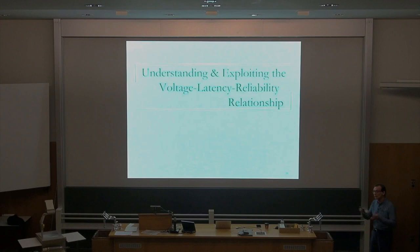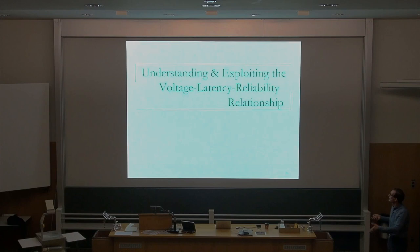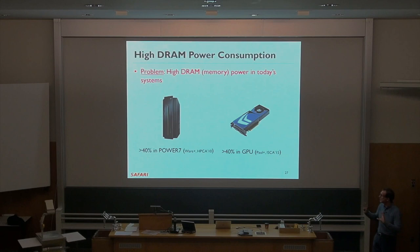There's clearly a relationship between latency and reliability. But the next question is: what is the relationship between voltage, latency, and reliability? Going three ways — voltage, latency, reliability, and maybe refresh, retention, and RowHammer. All of these different mechanisms affect each other, and if you can understand and model them comprehensively, maybe you can find correlations between them. IBM reported that more than 40% of system power is in DRAM, and in GPUs also more than 40% of system power is in DRAM.